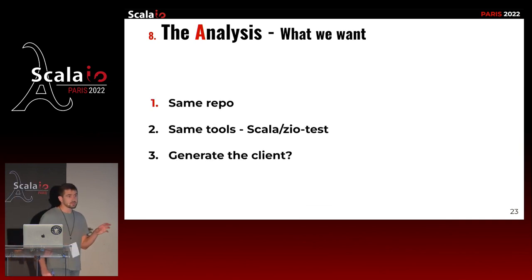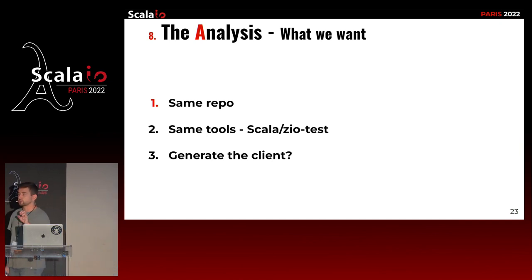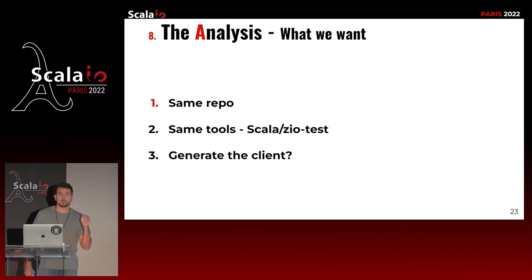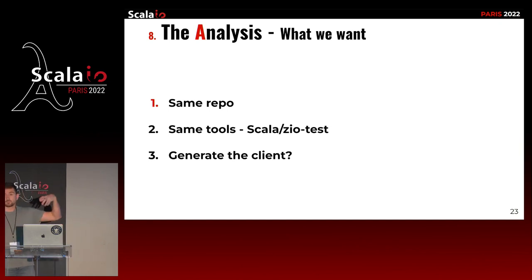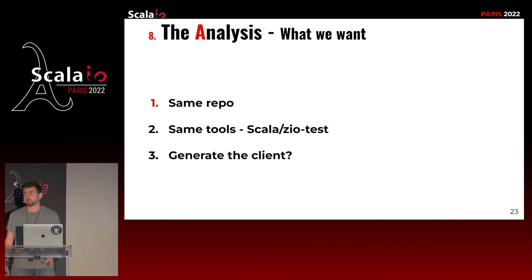With OpenAPI and Tapir, you can generate clients out of your documentation. In GraphQL you have a schema — can we generate a client out of the schema so that when I write requests to my API in my integration tests, I can use a generated client? I don't want to write it from scratch. I'm lazy — I don't want to write something that can be generated.